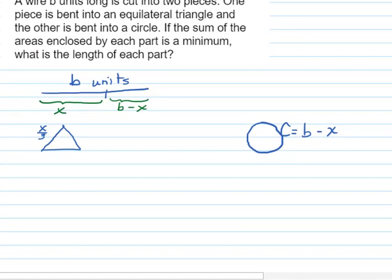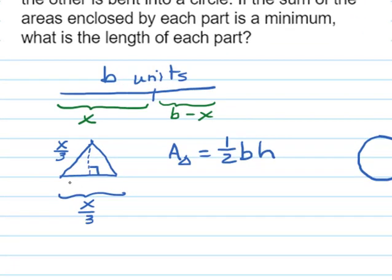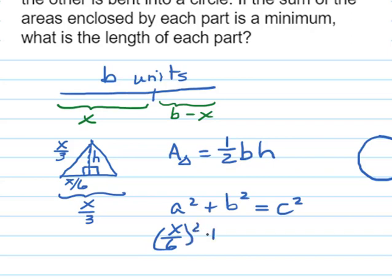Let's start with the equilateral triangle. I'm going to find the height so I can use the formula: area equals one half base times height. The base is X over three, so half the base is X over six. By dropping a perpendicular, I divide the equilateral triangle into two right triangles, so I can find the height using the Pythagorean theorem. Our two legs are X over six squared and H squared, and those add up to the hypotenuse, which is X over three squared.